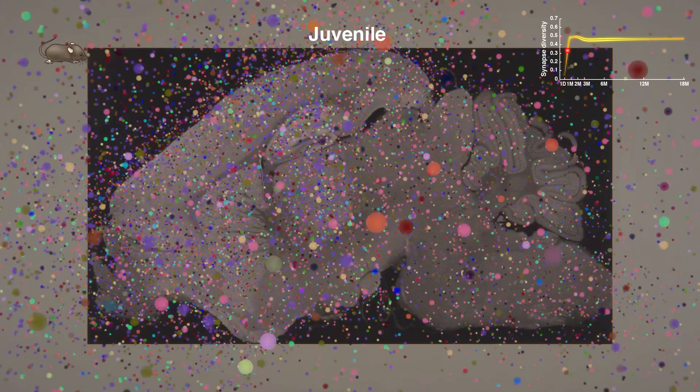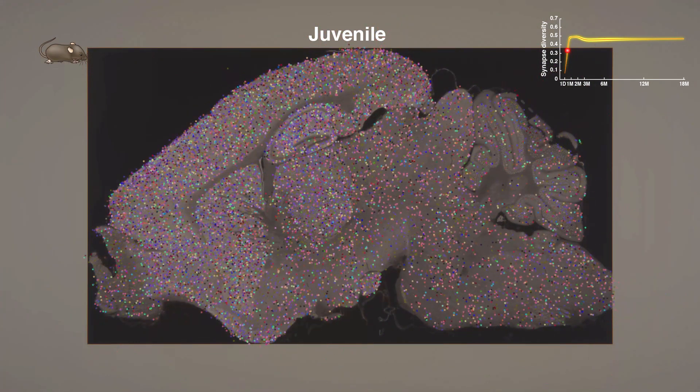Here is the juvenile brain, and it is clear that there are now more synapses and greater diversity.